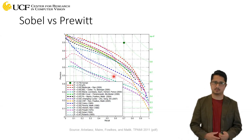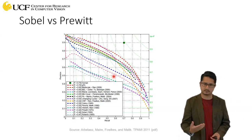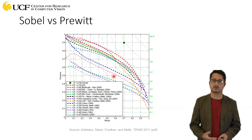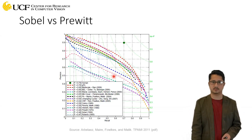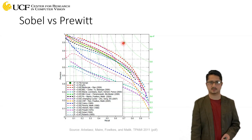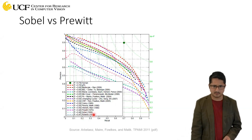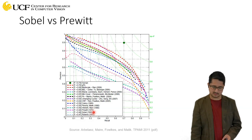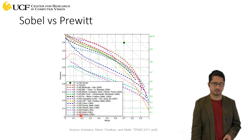Looking at the precision-recall plot, Sobel and Prewitt from 1968 and 1970 perform almost identically at around 0.48, far below human-level performance shown by the green dot. The gap reflects the limitations of these simple gradient-based methods.